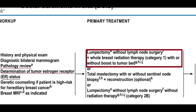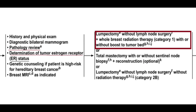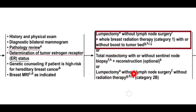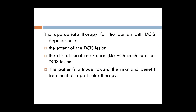Unfortunately, many surgeries are performed with lymph node dissection, which is not preferred for DCIS patients, because the incidence of lymph node involvement is very low given its non-invasive character. The other surgical management option is total mastectomy without sentinel lymph node biopsy, with optional reconstruction. A third option is lumpectomy without lymph node surgery and without radiation therapy, but this carries category 2B — not preferred. The preferred management, shown in the red box, is lumpectomy without lymph node dissection but with whole breast radiation.